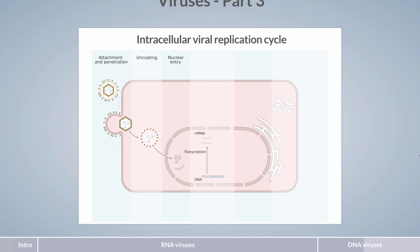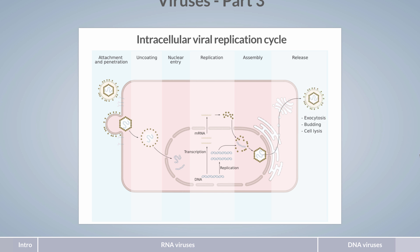Transcription produces mRNA, which is treated like regular host mRNA and travels to the cytoplasm for translation. DNA replication also occurs in the cell's nucleus, using mostly cellular proteins. To assemble new viral particles, viral structural proteins are transported into the nucleus, where they self-assemble. The virions then penetrate the nuclear membrane by vesicle formation and are subsequently released from the cell. These particles can now be transmitted to other cells or organisms.